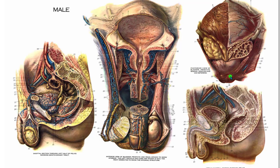And two Cowper's or bulbourethral glands are positioned just below the prostate gland. Here's that skeletal muscle that makes the external urethral sphincter, and the bulbourethral glands are really at the base of the root of the penis here at the back near the prostate gland.